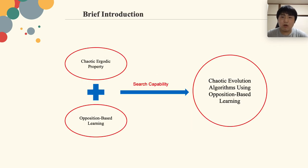In our proposed methods, we apply the Chaotic Ergodicity property and Opposition-Based Learning mechanism into the searching part to improve its search capability.